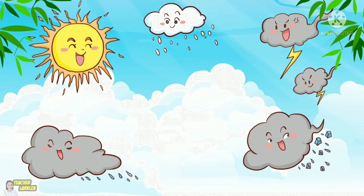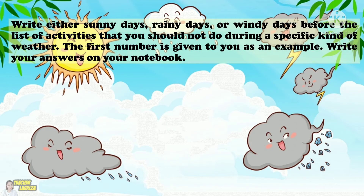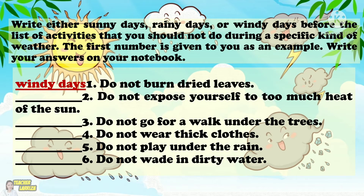Now, let us test your understanding. For our first activity, write either sunny days, rainy days, or windy days before each activity that you should not do during that specific kind of weather. The first number is given as an example. You can write your answers in your notebook. 1. Do not burn dried leaves — this should not be done during windy days. 2. Do not expose yourself to too much heat of the sun. 3. Do not go for a walk under the trees. 4. Do not wear thick clothes. 5. Do not play under the rain. 6. Do not wade in dirty water.